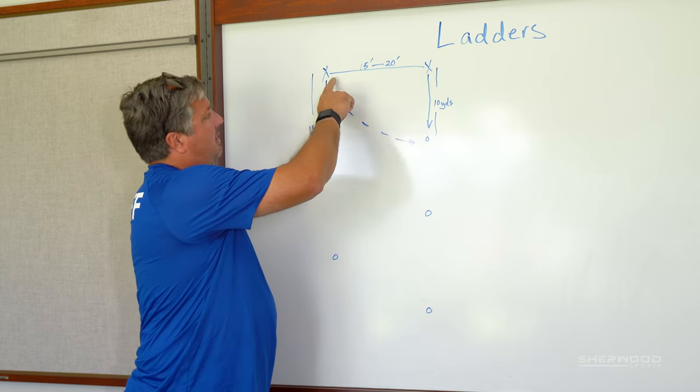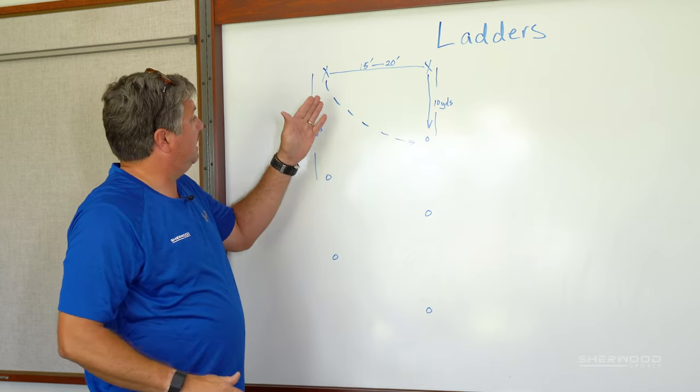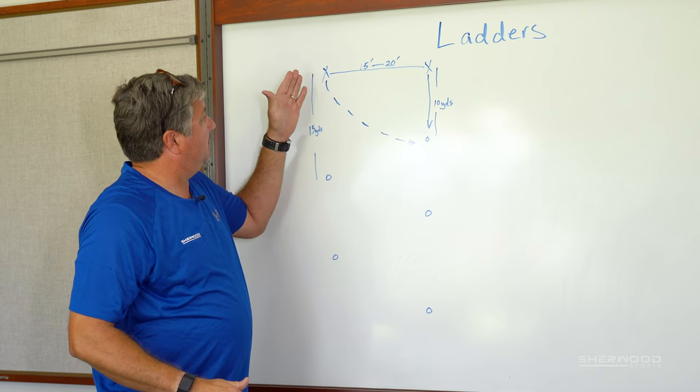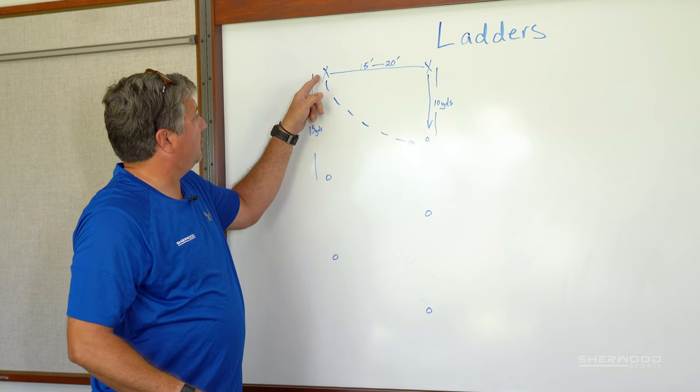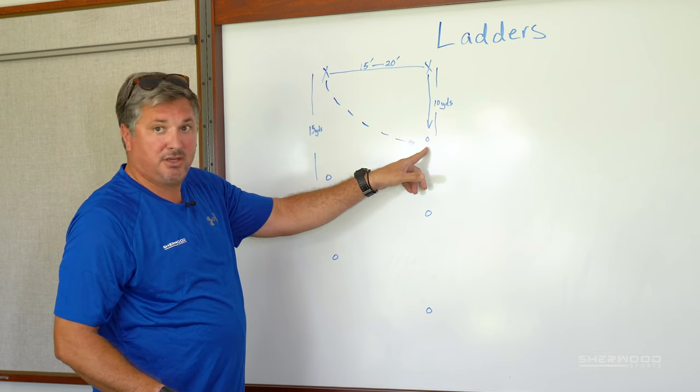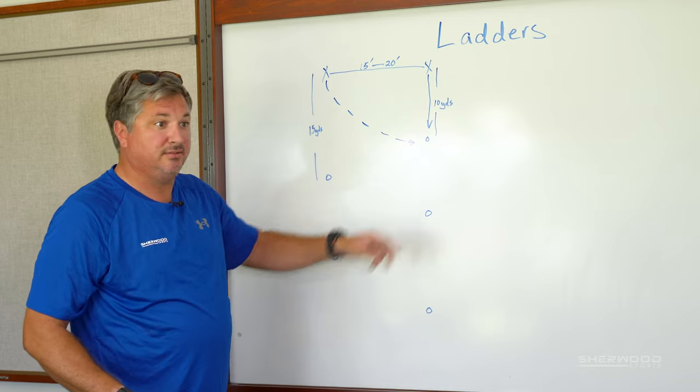You first start out by putting players 15 to 20 feet apart. The play starts when player number two makes his first run. Player one passes to the open position in anticipation of player number two receiving it.